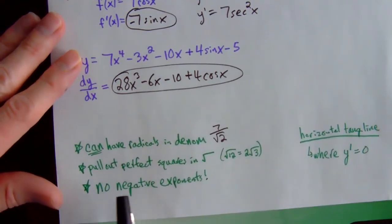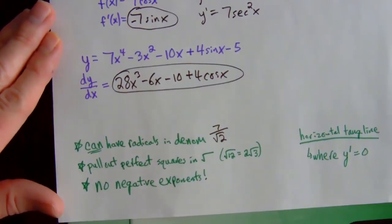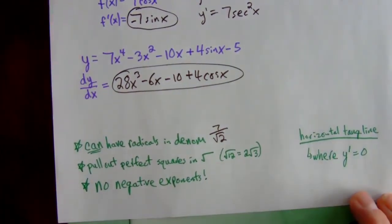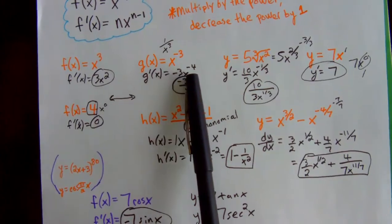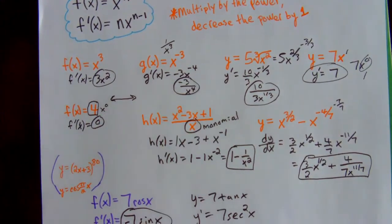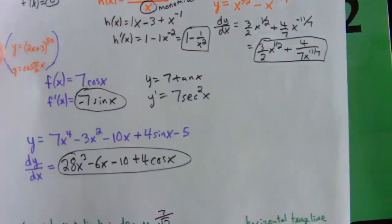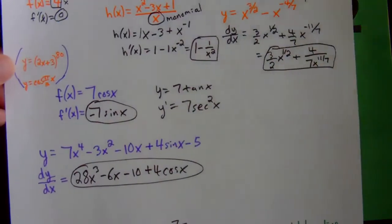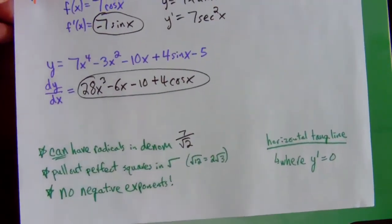You are allowed to have radicals in your denominator — that's fine. If it's a square root of 12, you must rewrite it as 2 radical 3. If you get an answer like 7 over radical 2, you can rationalize it, but leaving it as 7 over radical 2 is perfectly fine. Throughout the whole year: no negative exponents in your final answer. Getting rid of negative exponents will help when we start doing applications of derivatives.